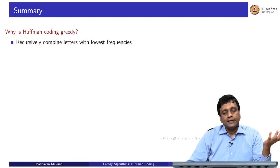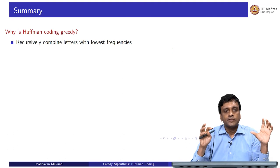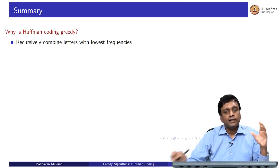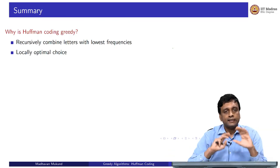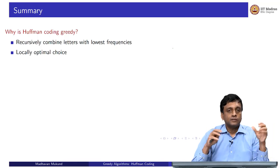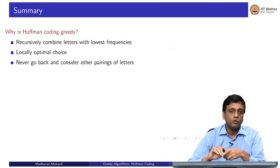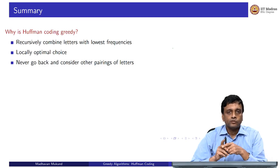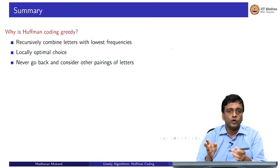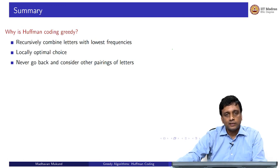This is a greedy algorithm because at every step we pick the two letters with the current lowest frequency and combine them, never revisiting that decision — those two will be siblings forever. It follows the classical greedy paradigm: make a locally optimal choice and stick with it. This problem has an interesting history: the idea of optimal encoding is the subject of information theory, invented by Claude Shannon around the end of World War II, tied to the rise of radio and telecommunications.